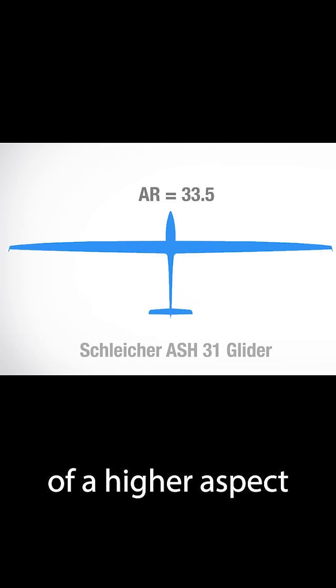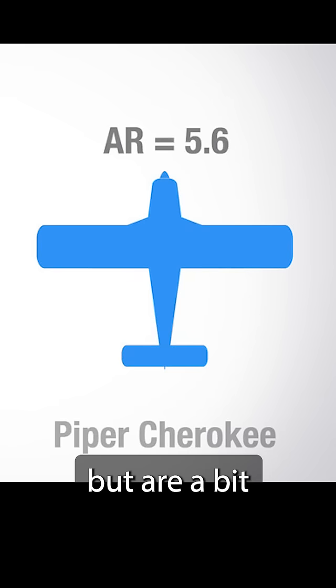A glider is an example of a higher aspect ratio aircraft, and it can produce an incredibly efficient amount of lift. General aviation aircraft have smaller aspect ratios but are a bit more maneuverable than a glider would be.